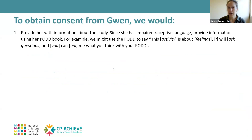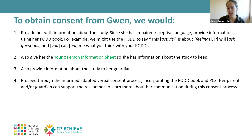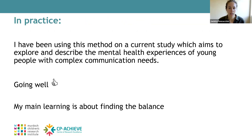To obtain consent from Gwen, I would provide information about the study using her PODD book to support her understanding — because this is informed consent, not just consent. For example, I might say: 'This activity is about feelings. I'm going to ask you questions and you can tell me what you think with your PODD.' Words in square brackets represent symbols in the book. I'd also give her the young person information sheet, provide information to her guardian, and go through the adapted consent process incorporating her PODD book.